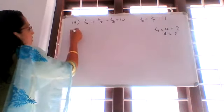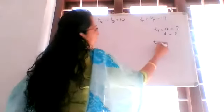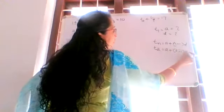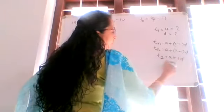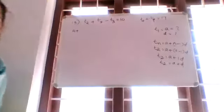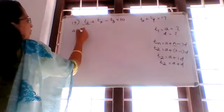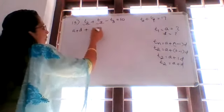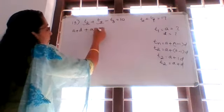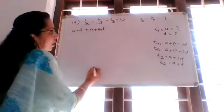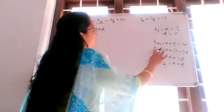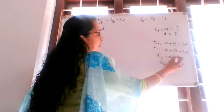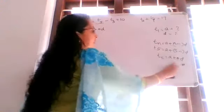Instead of T2, we can replace it using TN equals A plus N minus 1 into D. T2 is equal to A plus 2 minus 1 into D, so T2 is A plus D. T5 is equal to A plus 5 minus 1 into D, so T5 we can replace as A plus 4D.